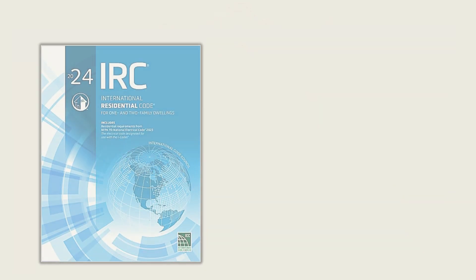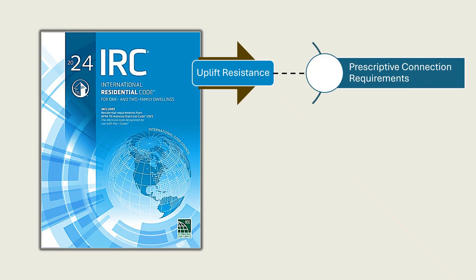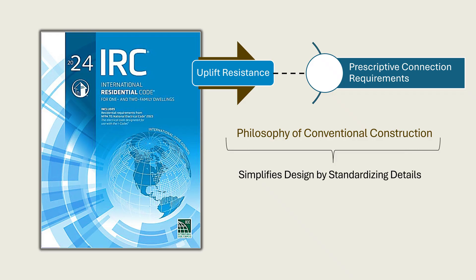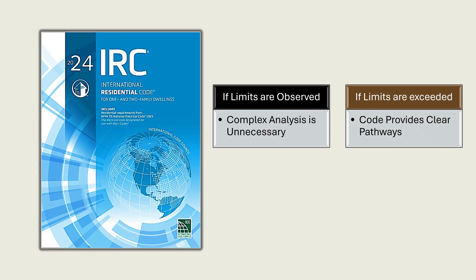The International Residential Code addresses wind uplift by embedding uplift resistance into prescriptive connection requirements without requiring explicit pressure calculations. This approach reflects the philosophy of conventional construction, which simplifies design by standardizing details that have been shown to perform adequately within defined limits. When those limits are observed, complex analysis is unnecessary. If the limits are exceeded, the code provides clear pathways to stronger, load-rated connections.